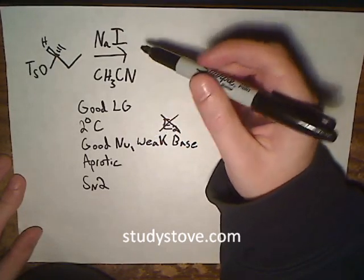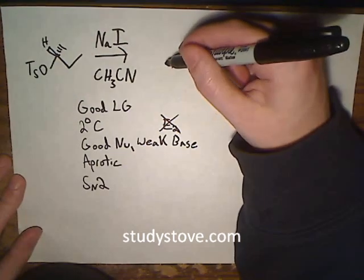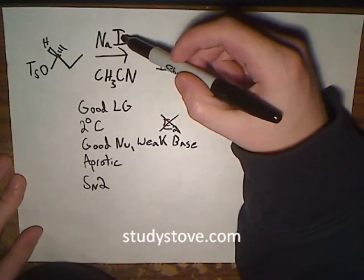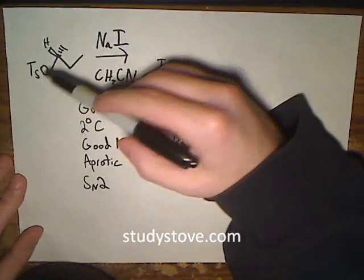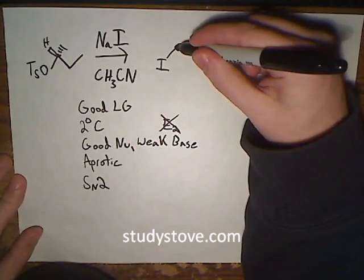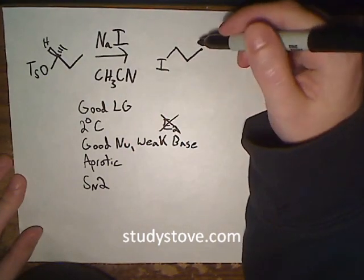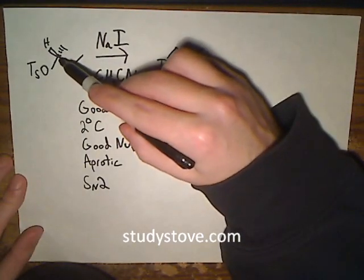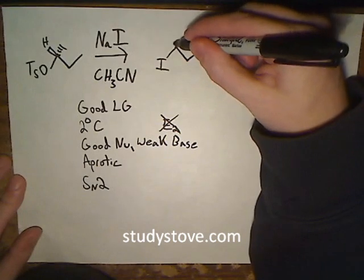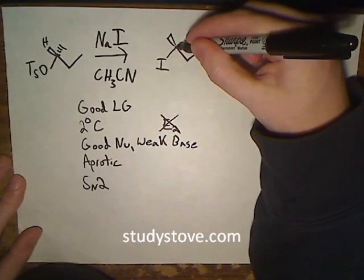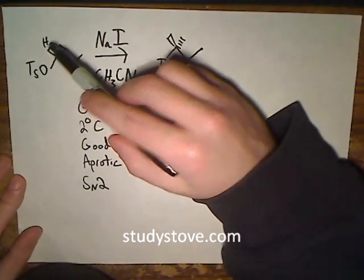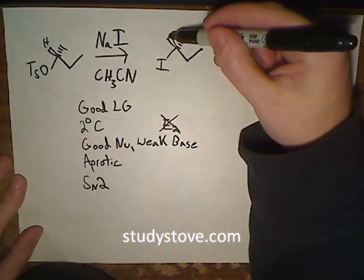As it is a substitution reaction, we can start by drawing the product by just drawing the iodide atom in the place of the tosyl group. The easiest way to account for the change in stereochemistry is to just switch these two substituents. Where we had a proton before, we're now going to have a methyl group.